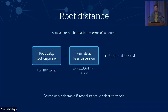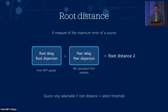We then combine this value with the delay we've calculated, and also with the delay and dispersion from the upstream server. Combining these gives us a root distance lambda for this server, which is a measure of the maximum error of this source. This is what we use to determine whether a server is selectable — we compare it to a threshold called the select threshold. If the root distance is less than the threshold then the server is selectable and carries on to the next stage; otherwise we discard it, essentially filtering out servers with really massive error bounds.